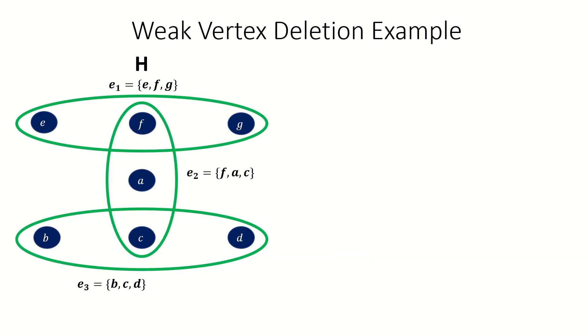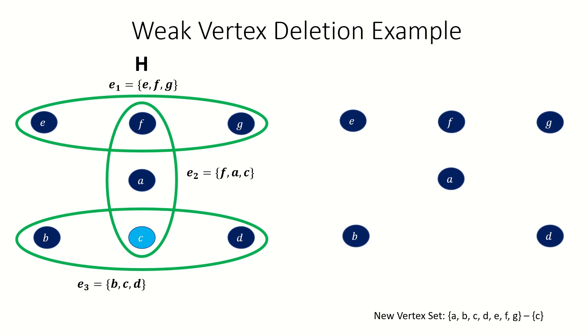Let's find the result of weak deletion of vertex c from this hypergraph. First, find our new vertex set. It will be a, b, d, e, f, g.